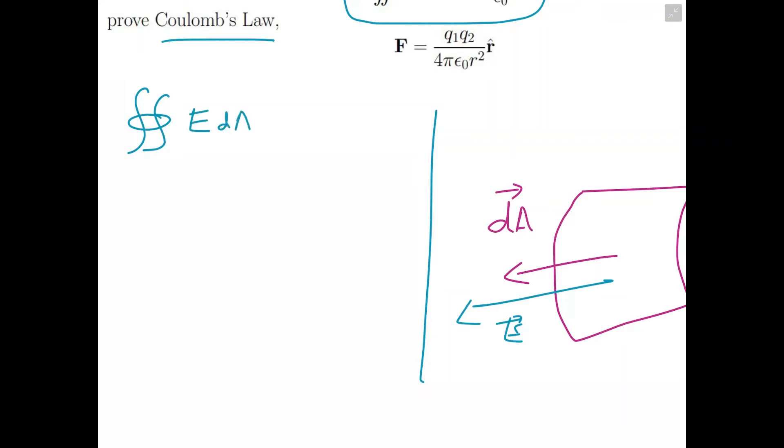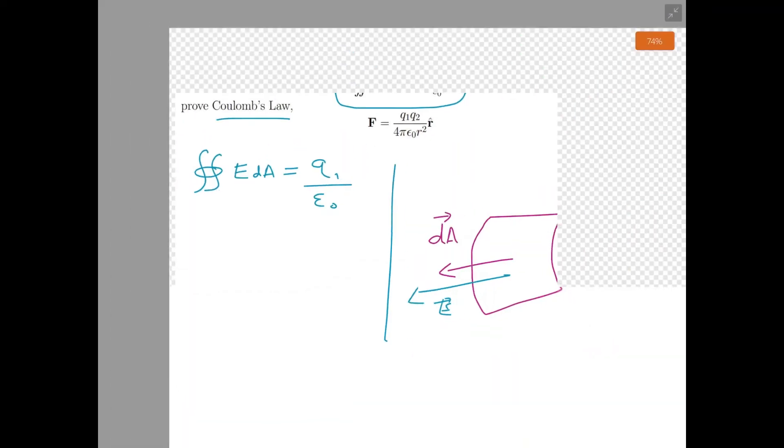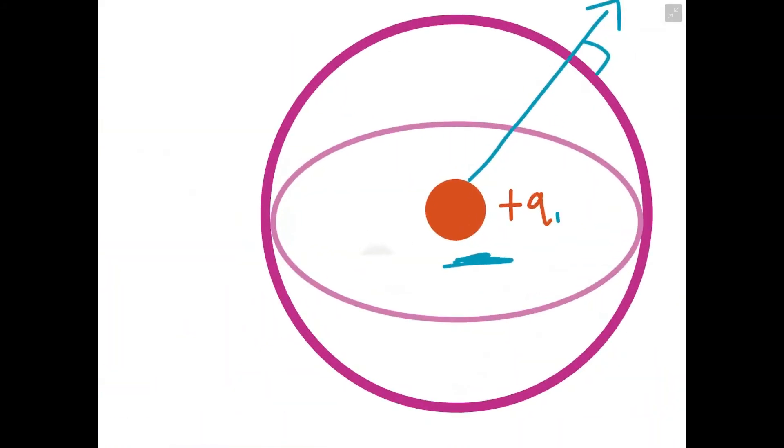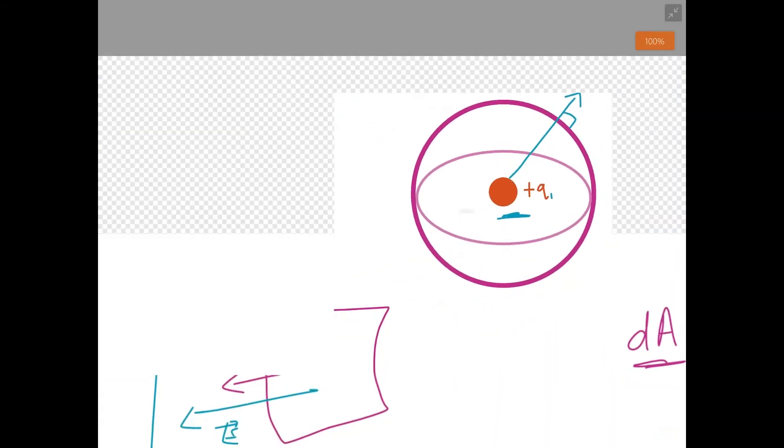That would be equal to E times dA, and that's equal to the enclosed charge, which we'll call q₁, divided by ε₀, the permittivity of free space for electric fields. So let's just call our charge here q₁.